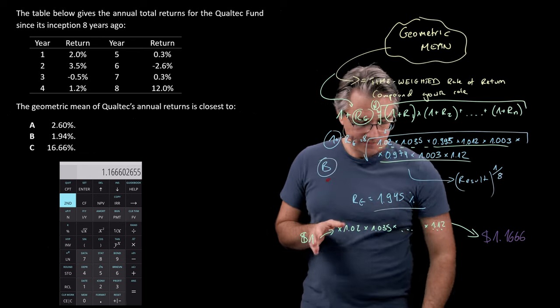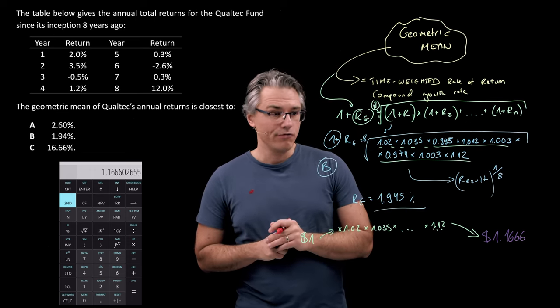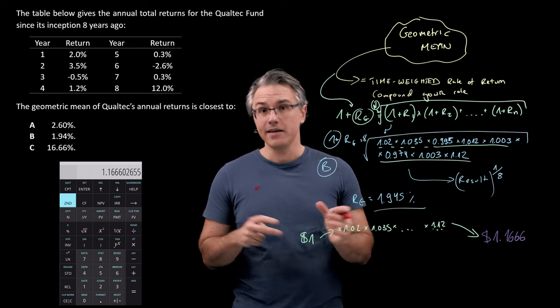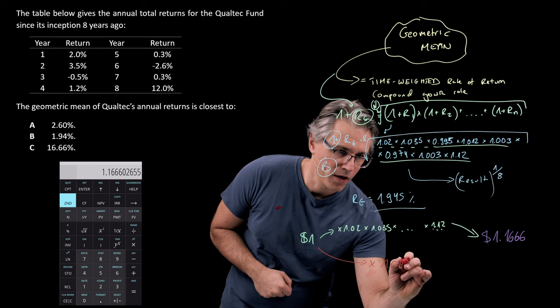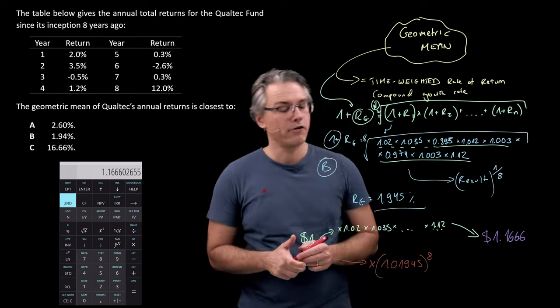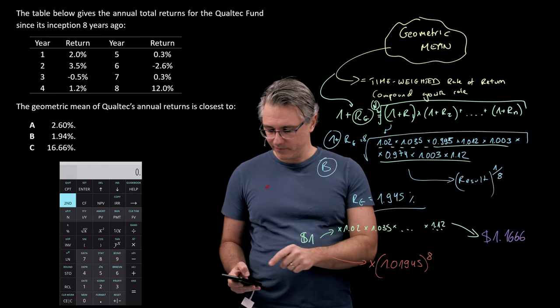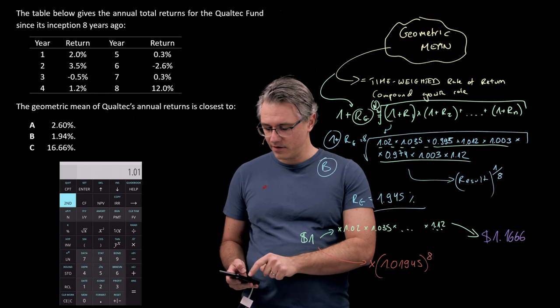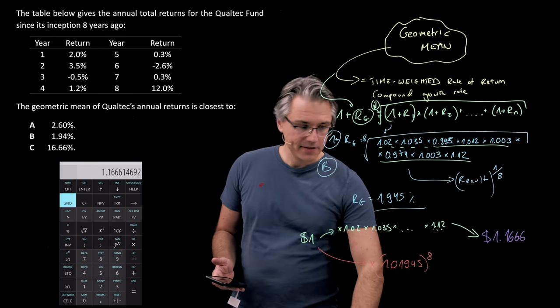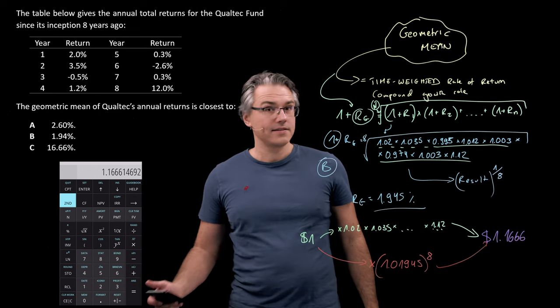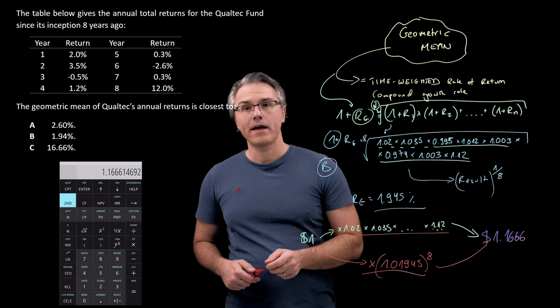Equivalently, this is the same as saying, on average, the 1 dollar grew at a rate of 1.945% for 8 years. So that's the same as saying this grew by 1.01945 raised to the power of 8. There will be a bit of rounding, but it should be more or less the same result. So 1 dollar times 1.01945 raised to the power of 8. As you can see, it gives absolutely the same result, $1.1666. This is equivalent to this path of growth in terms of being an average compound rate of growth.